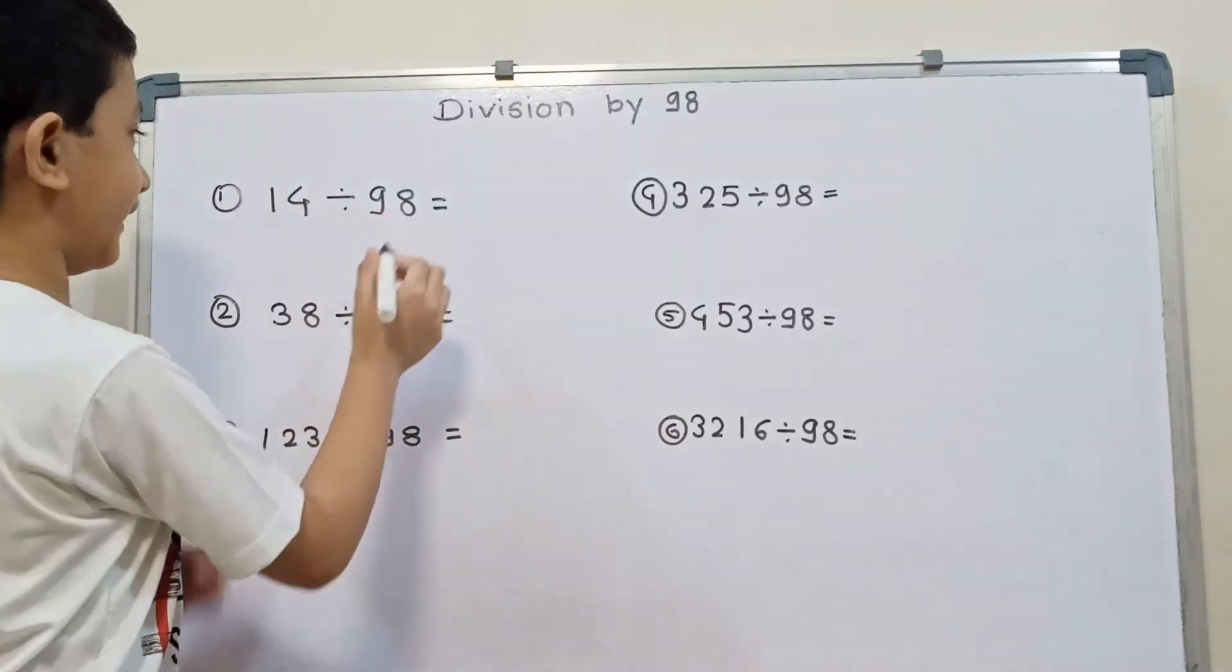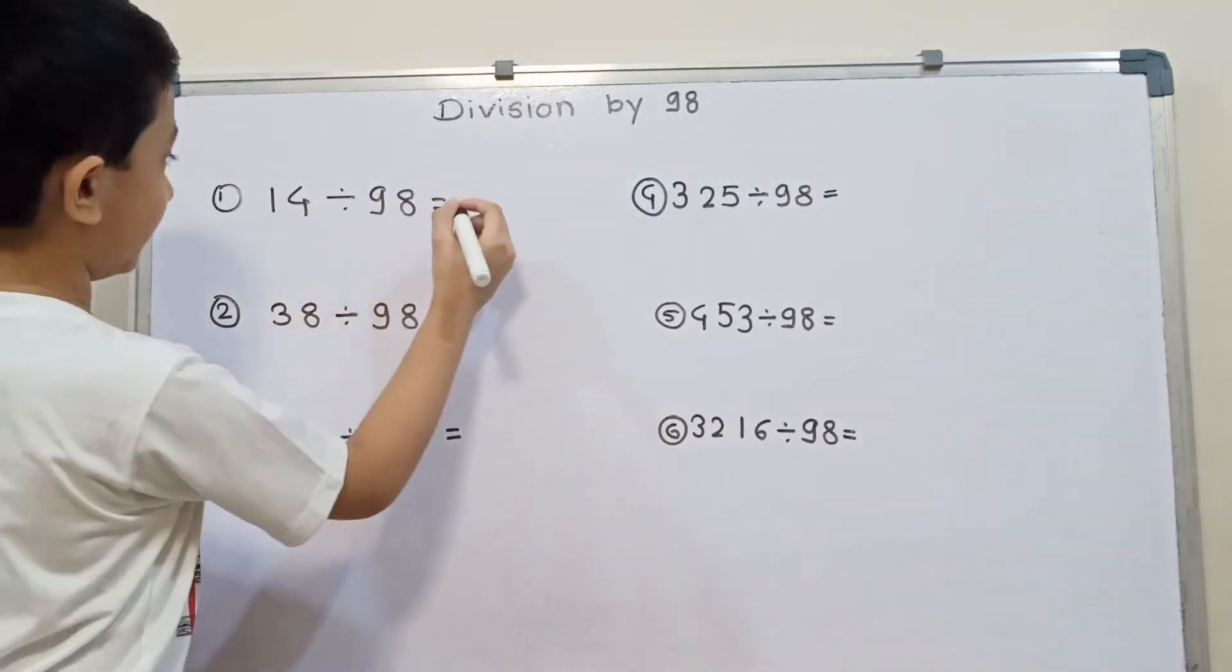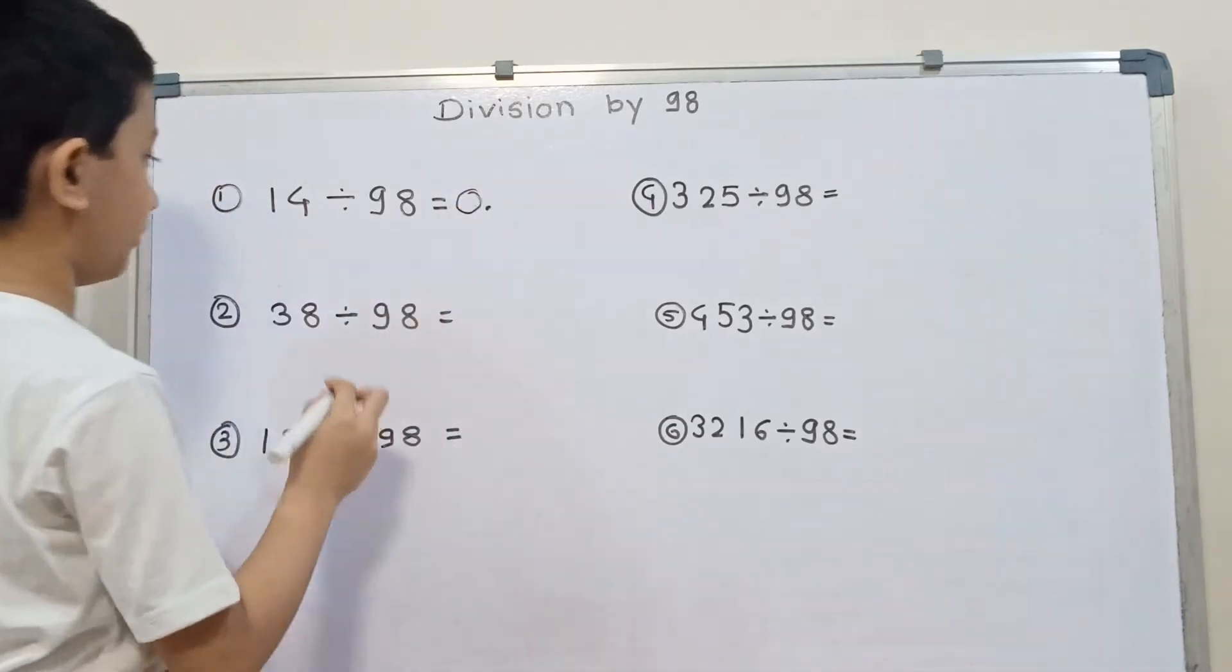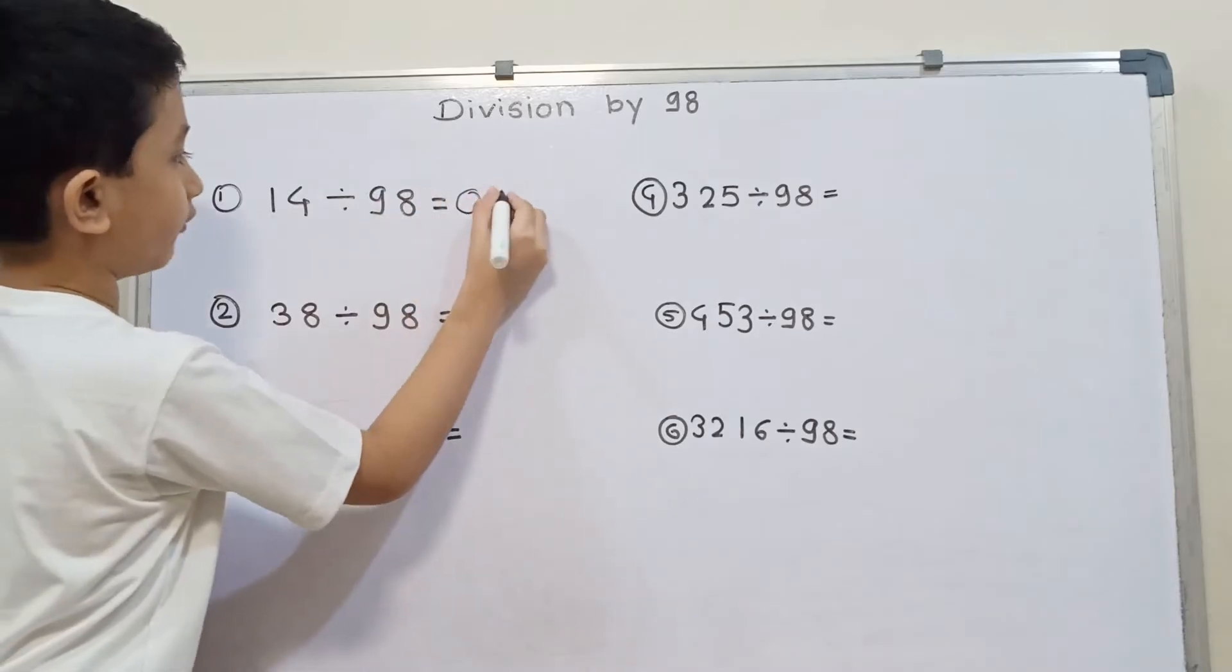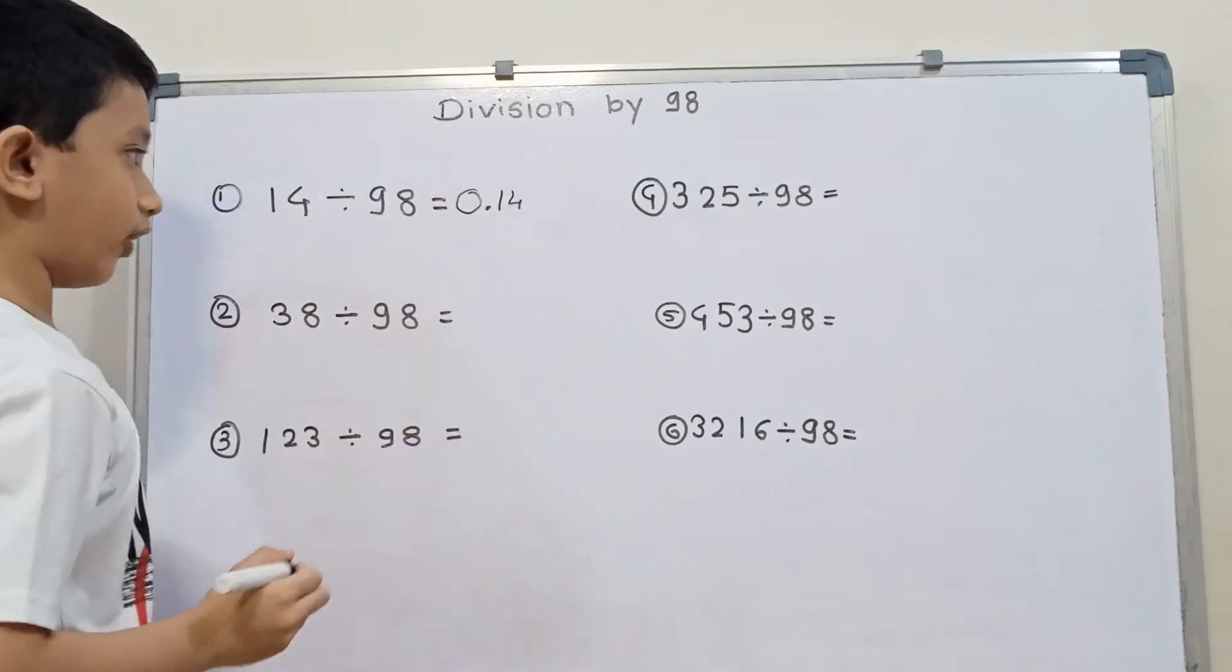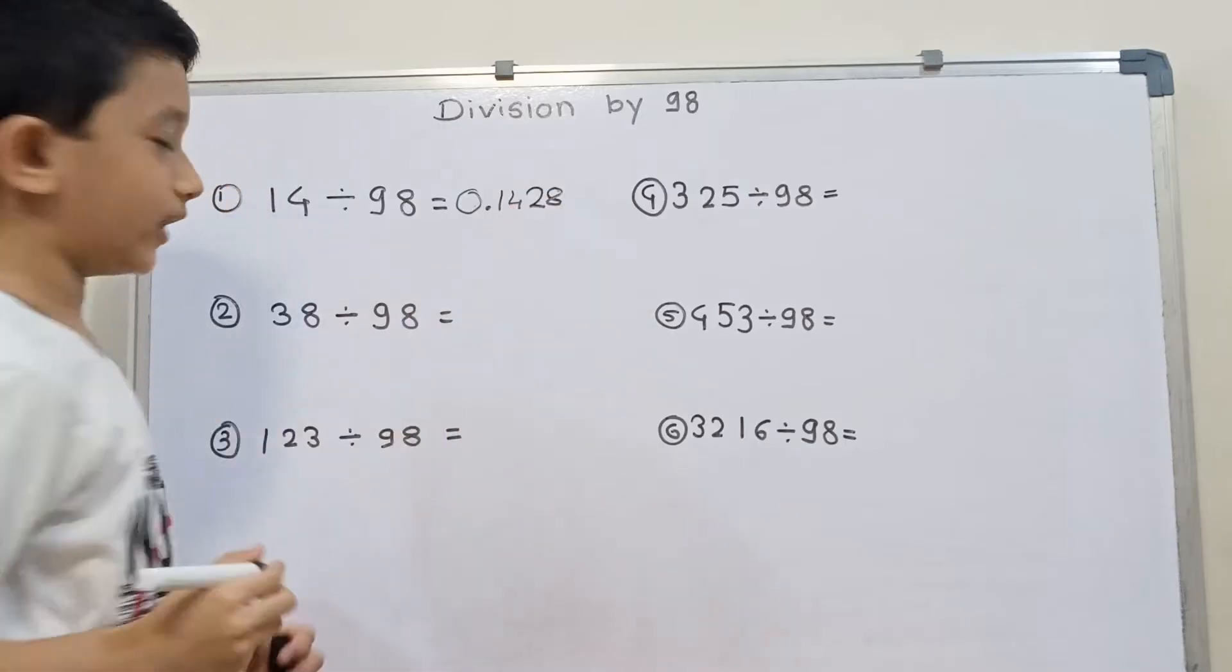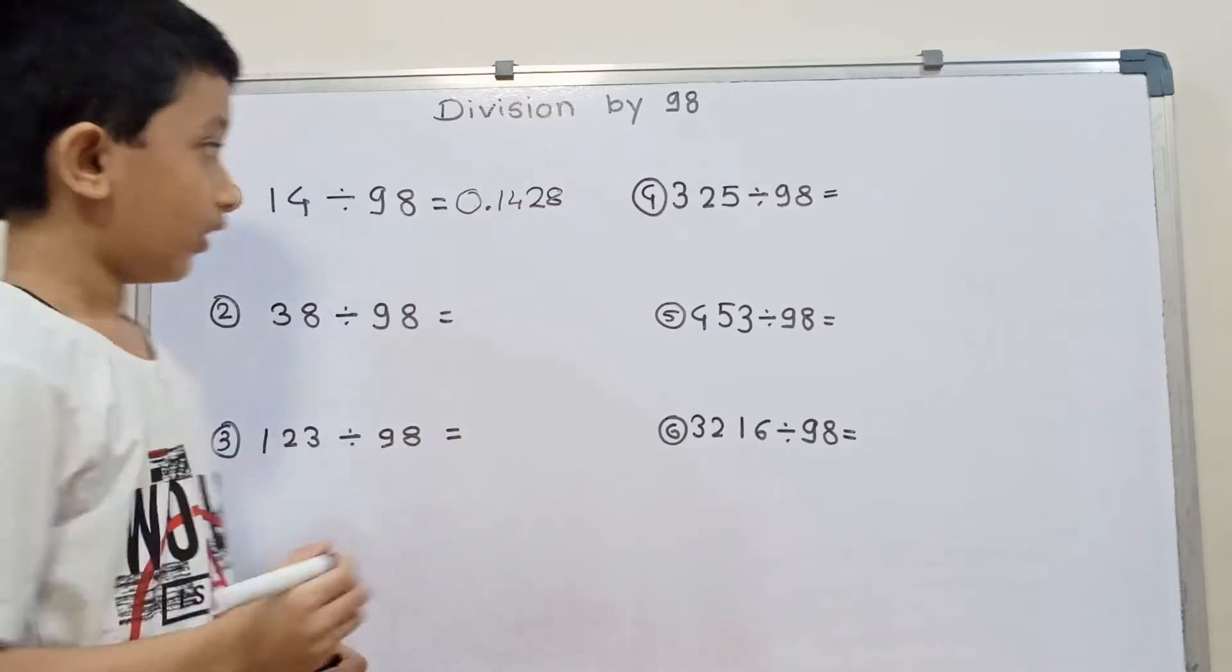14 divided by 98. First 14 is less than 98. We will write here 0.0 and then we will write 14. And then 14 to double is 28. So the answer is 0.1428.